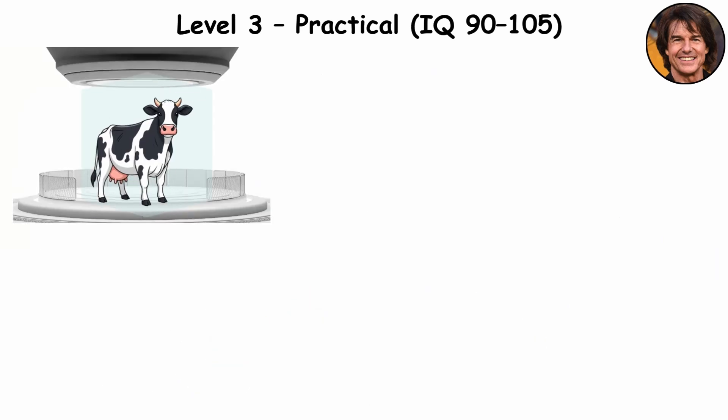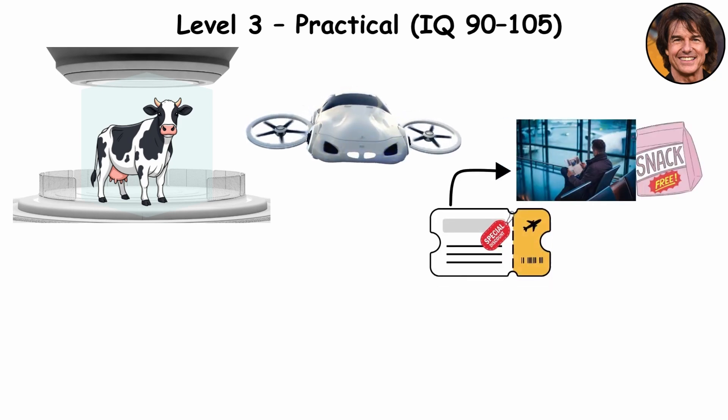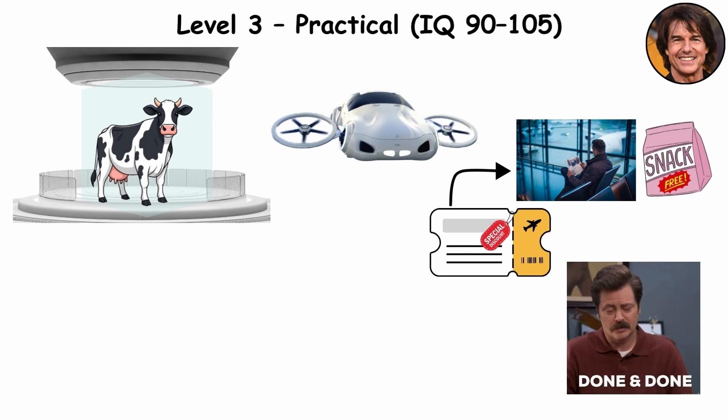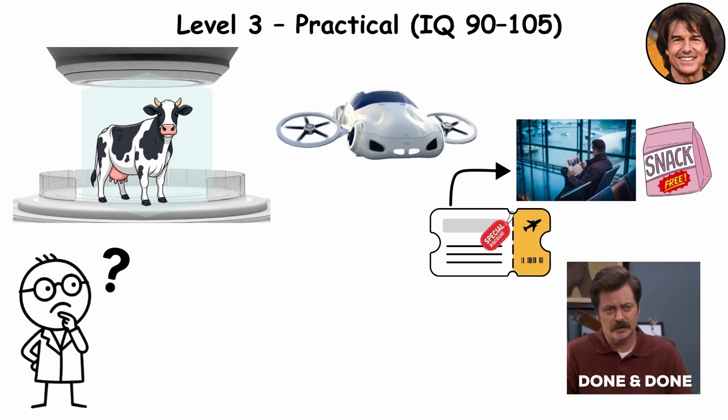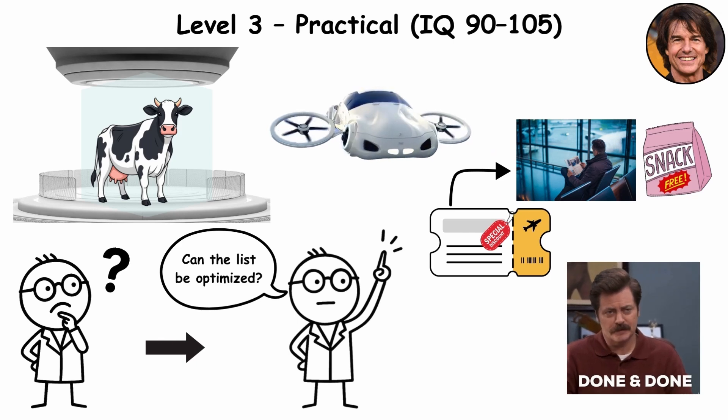Sure, they may not invent teleportation or flying cars, but they'll figure out how to book the cheapest flight with two layovers and free snacks. Because at this level, intelligence means making things work. But what happens when the checklist maker starts asking if the list itself could be optimized?